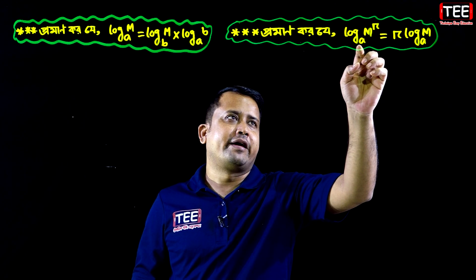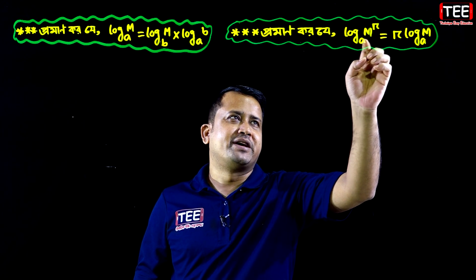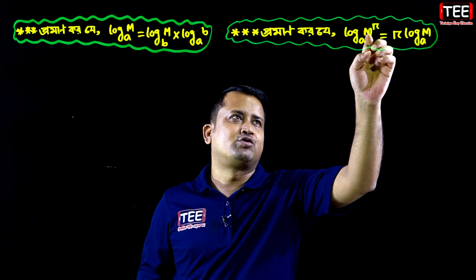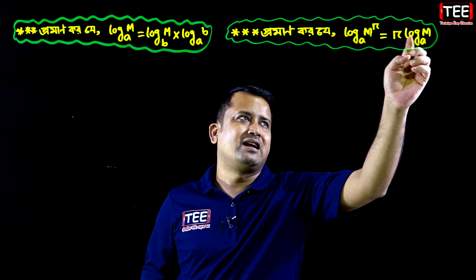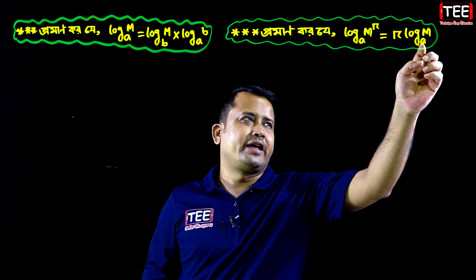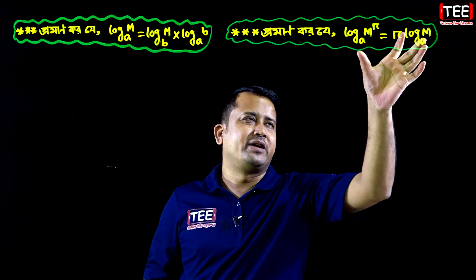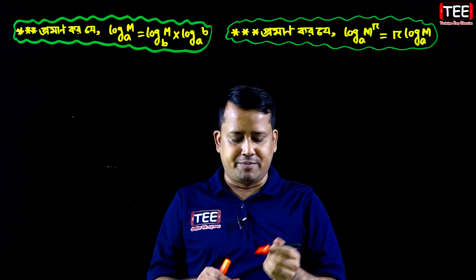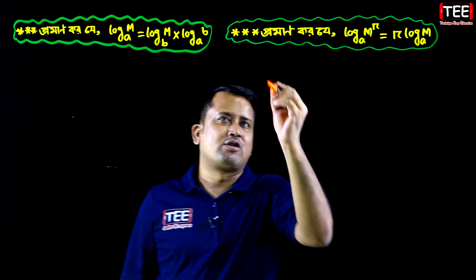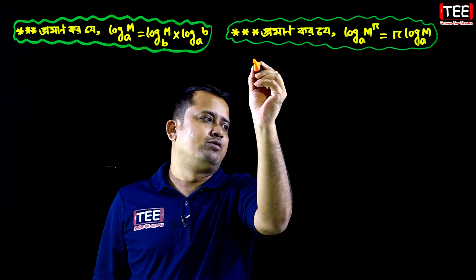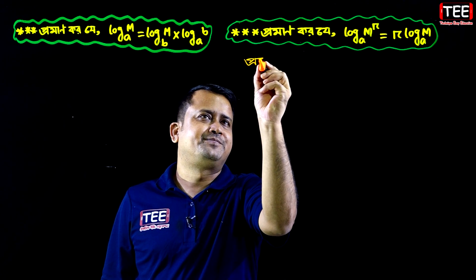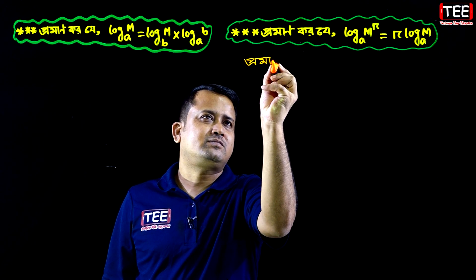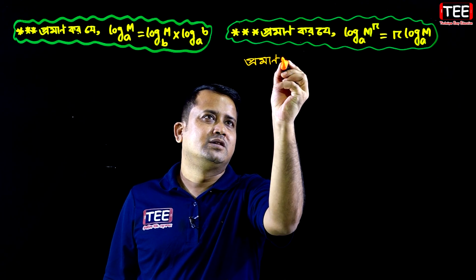The first property to prove is: log base a of m to the power r is equal to r times log base a of m. This is the power rule for logarithms.